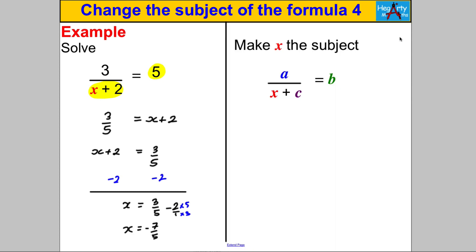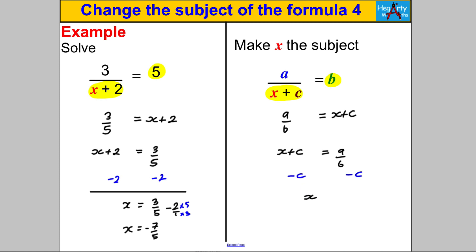Let's apply that approach to changing the subject in this more complicated case: make X the subject of a over (X + C) equals B. Multiplying by X and then dividing by B just swaps the positions of these, so in one move: a over B equals X + C. Writing it with X on the left: X + C is a over B. To make X the subject, subtract C from both sides, giving X equals a over B minus C.